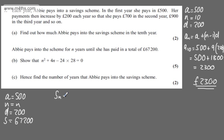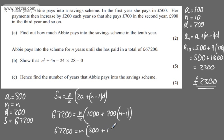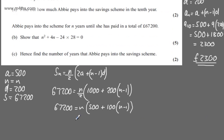Using the sum of the first N terms equals N over 2 times 2A plus N minus 1 times D, we have £67,200 equal to N over 2 times 2 lots of A giving £1,000, plus N minus 1 multiplied by D, which is £200 times N minus 1. We can divide through the bracket by 2, so we'll have £67,200 equals N times £500 plus £100 lots of N minus 1.